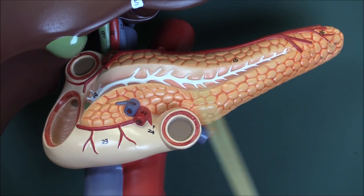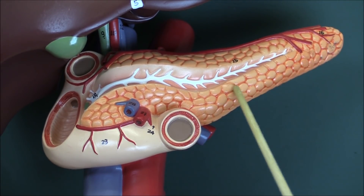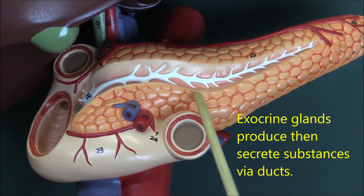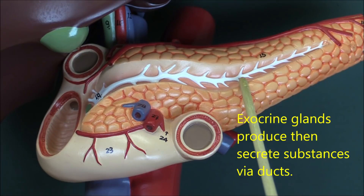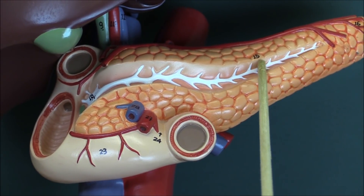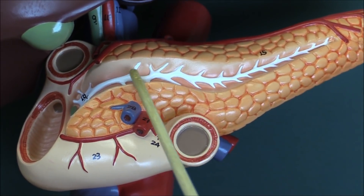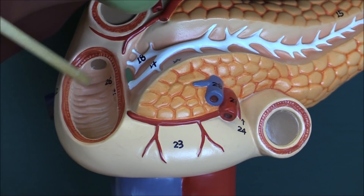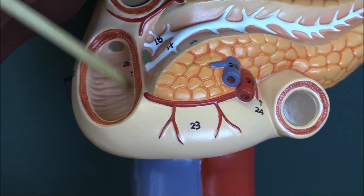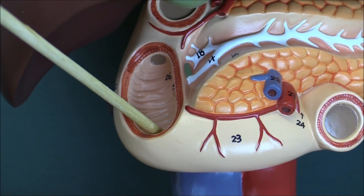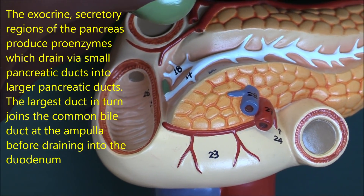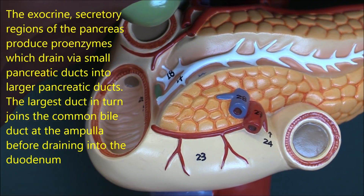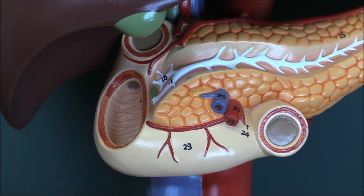The pancreas contains exocrine tissue, and this exocrine tissue produces digestive enzymes in inactivated forms. These pass into the central pancreatic duct, travel along the pancreatic duct, and under the right conditions are released into the lumen of the duodenum. Once in the lumen of the duodenum, these digestive enzymes are activated and they will digest proteins, fats, and carbohydrates.